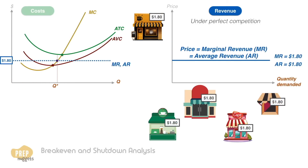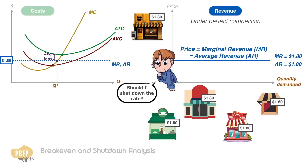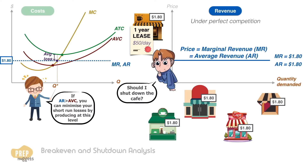Now let's look at another scenario where the market price of coffee is $1.80. The profit maximizing point has moved, but notice that at this price the average revenue is lower than the average total cost — the cafe will run at a loss. However, you've signed a lease for one year, so in the short run you may still have to pay fixed costs regardless. At this price point, it's still above the average variable cost per cup, meaning you can at least cover variable costs and part of the fixed costs, so you should continue running the cafe in the short run to minimize losses.